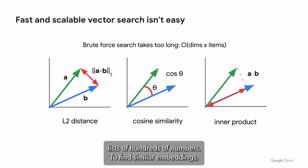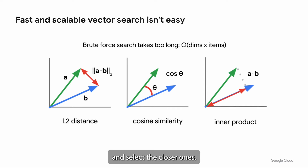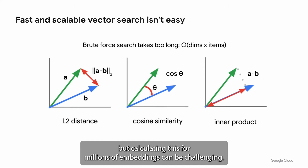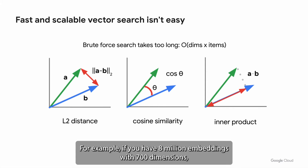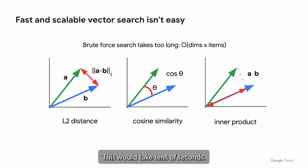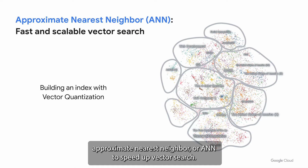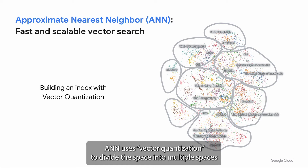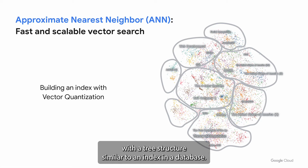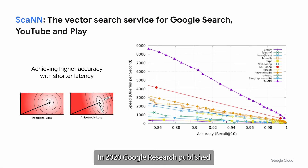Embeddings are vectors — lists of hundreds of numbers. To find similar embeddings, we can simply calculate the distance between two embeddings and select the closer ones. But calculating distances for millions of embeddings can be challenging. For example, if you have 8 million embeddings with 700 dimensions, you would need to perform 8 million times 700 calculations, which would take tens of seconds. Researchers are studying a technique called approximate nearest neighbor, or ANN, to speed up vector search. ANN uses vector quantization to divide the space into multiple spaces with a tree structure, similar to an index in a database, enabling very fast and scalable search with billions of embeddings.